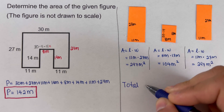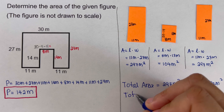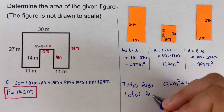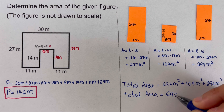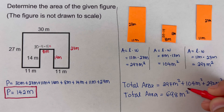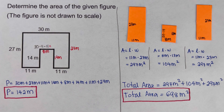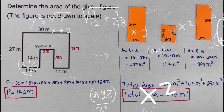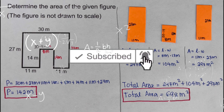The total area is the sum of all three rectangles: 297 plus 297 plus 104 equals 698 meters squared. This is the total area of this compound figure. Did you get the same answer? If you find this video helpful, hit like and subscribe for more math videos. See ya!